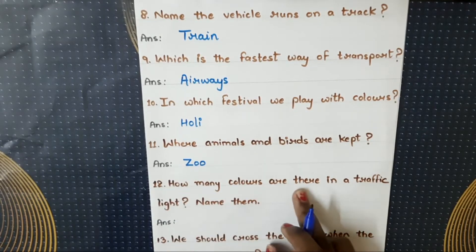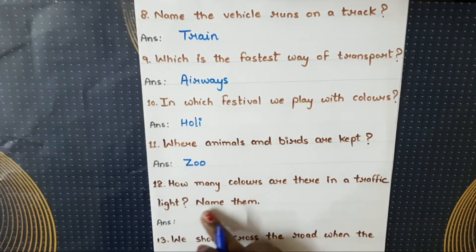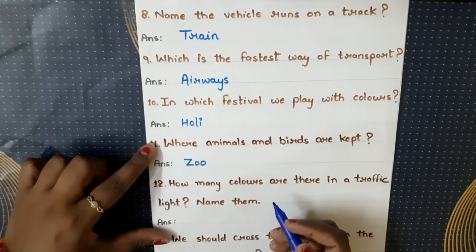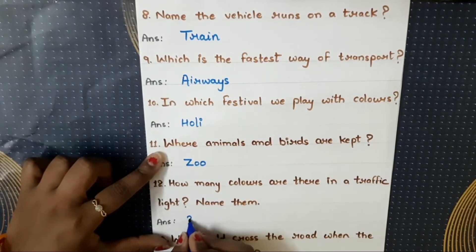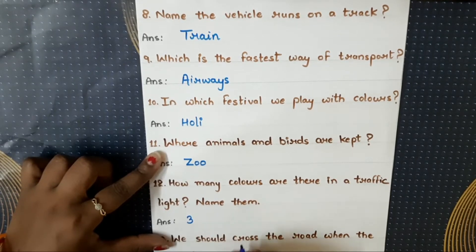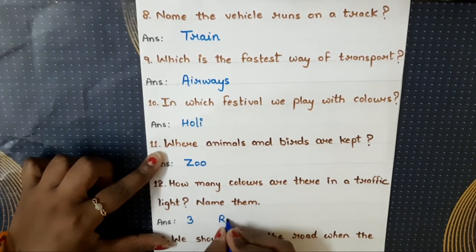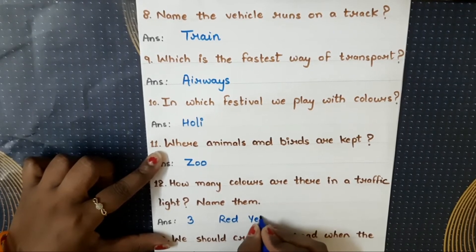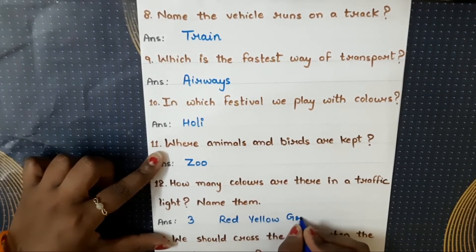How many colors are there in a traffic light? Name them. Traffic light mein kitne colors hote hain? There are three colors in a traffic light, and they are red, yellow, and green.